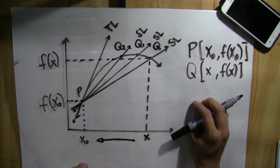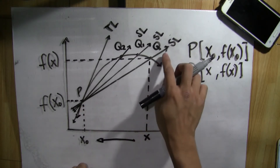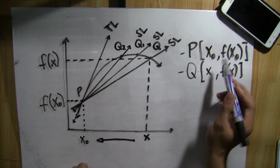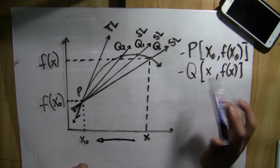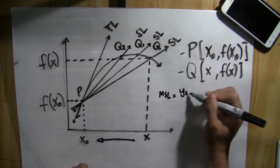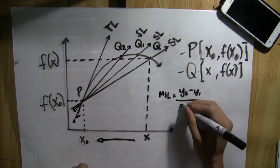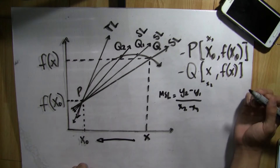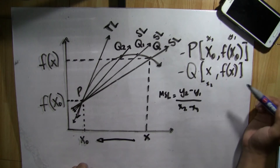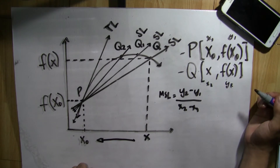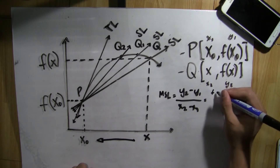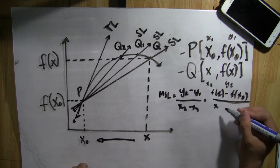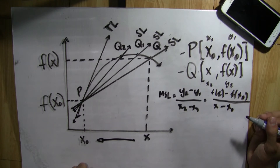Now let's first get one secant line from the graph, which is the secant line PQ. For the coordinates of P: x-sub-0 and F of x-sub-0, and the coordinates of Q: x and F of x. Now we get the slope, where x-sub-0 is x-sub-1 and F of x-sub-0 is y-sub-1, and F of x is y-sub-2. Therefore, we get the formula: F of x minus F of x-sub-0, all over x minus x-sub-0.